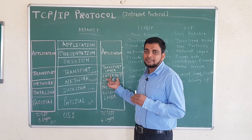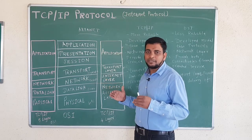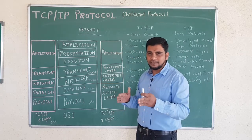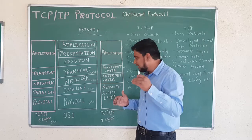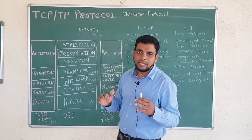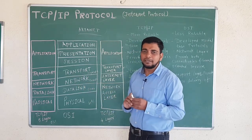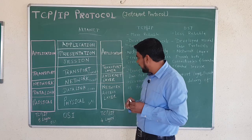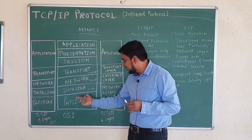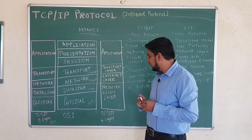The internet layer is responsible for routing — that is, finding the shortest path. When a packet is transmitted, the network layer decides which path it will follow. The router receives information from the network layer, evaluates different available paths, and finds the shortest one. That process is called routing. This functionality of the internet layer is the same as the network layer in OSI.